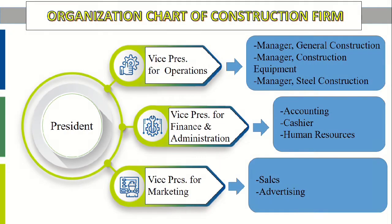The Organization Chart of a Construction Firm shows that from the president, there are three vice presidents: VP for Operations, VP for Finance and Administration, and VP for Marketing. Under the VP for Operations are the Manager for General Construction, Manager for Construction Equipment, and Manager for Steel Construction. Under VP for Finance and Administration are Accounting, Cashier, and Human Resources. Under VP for Marketing are Sales and Advertising.